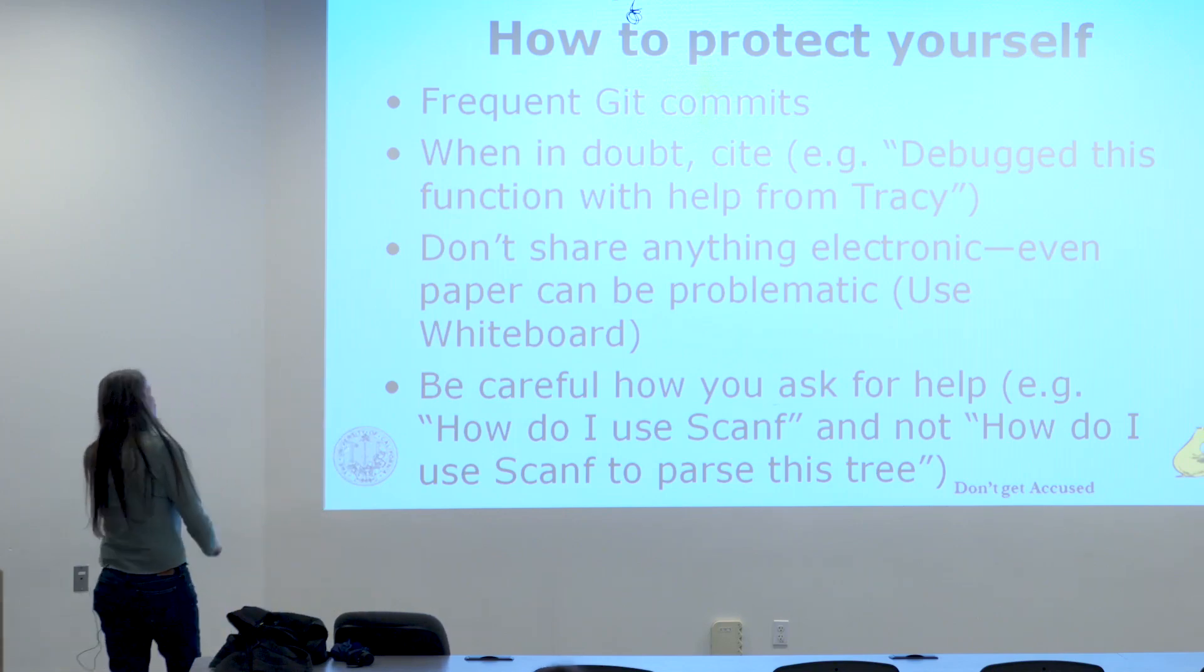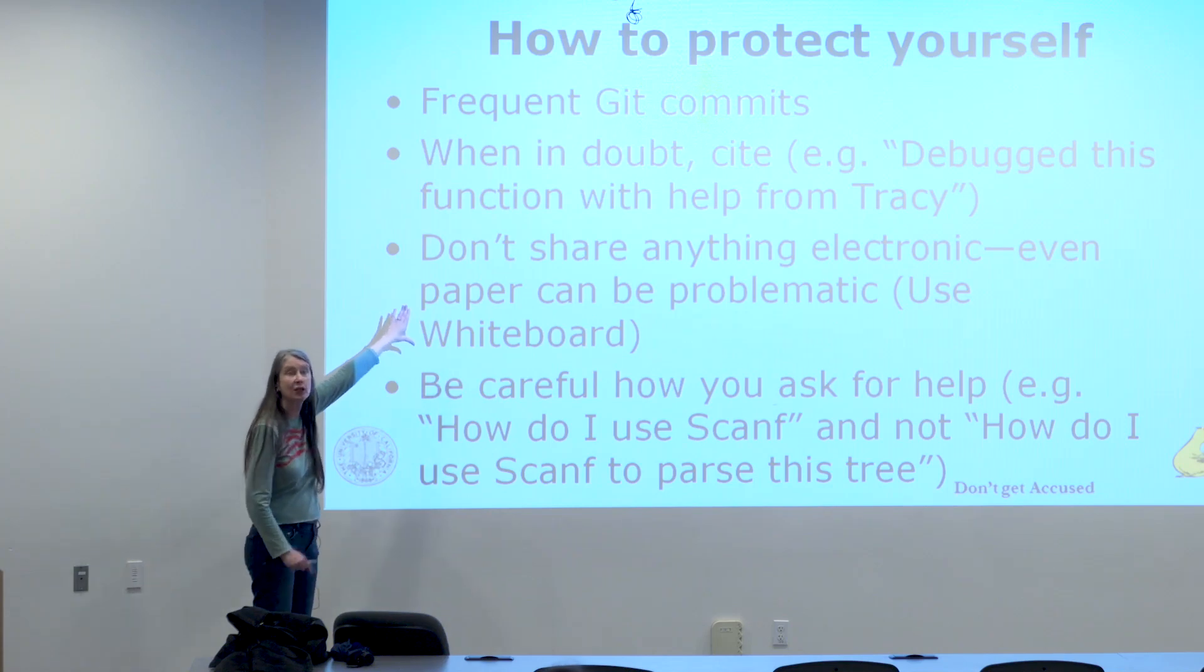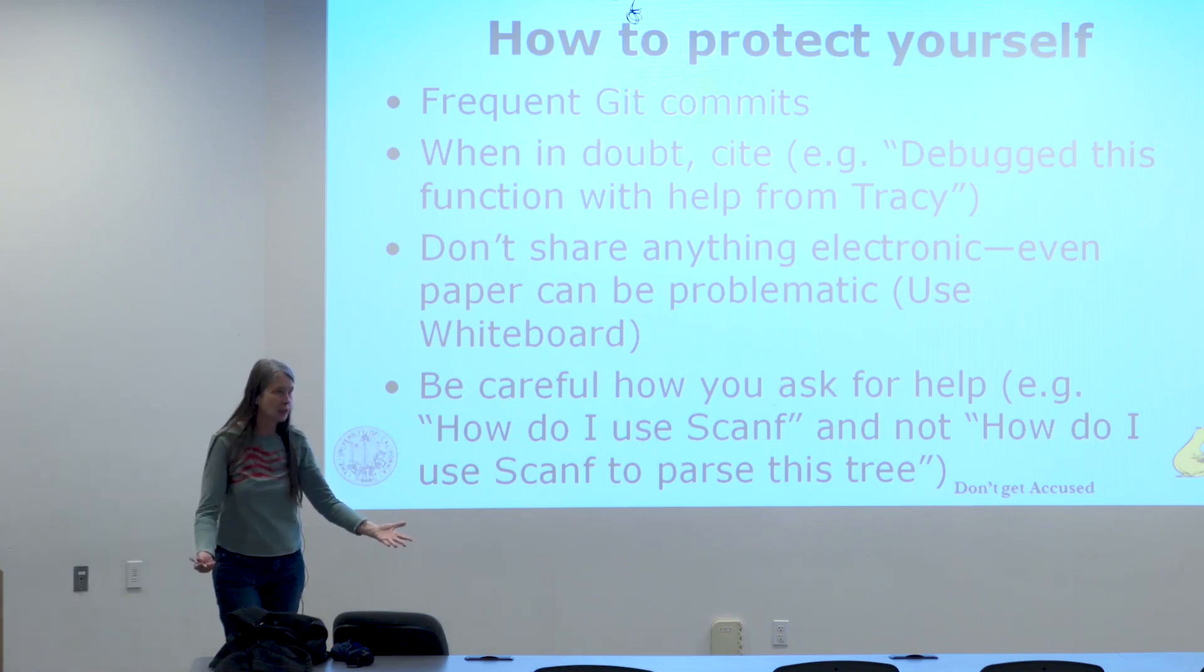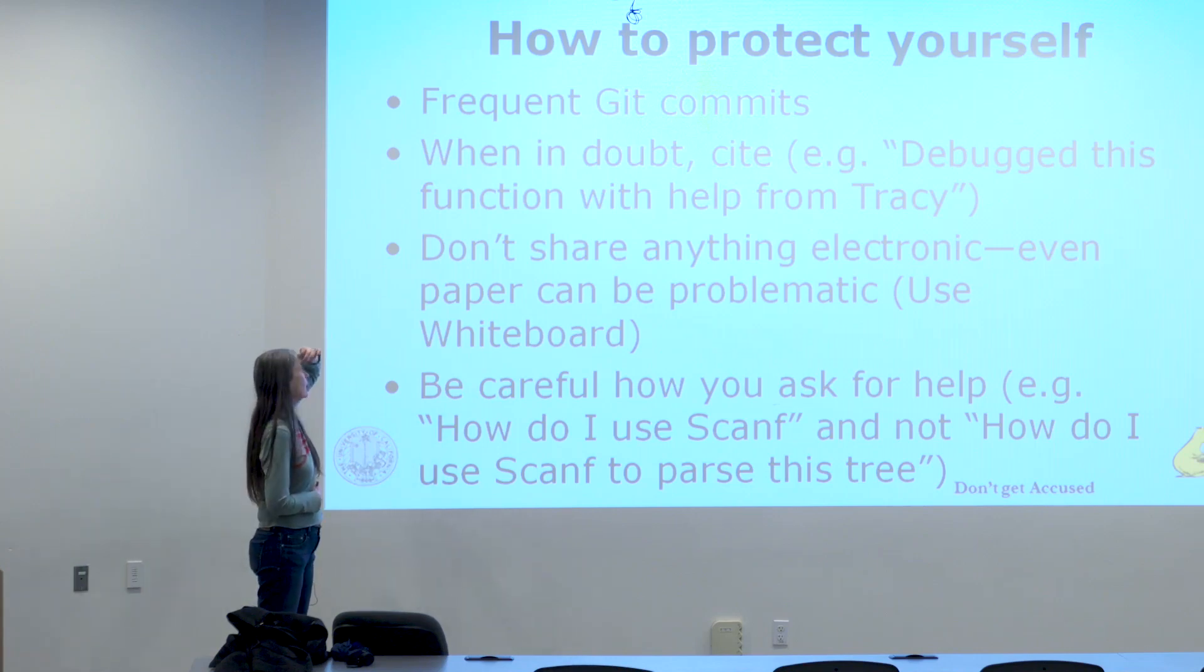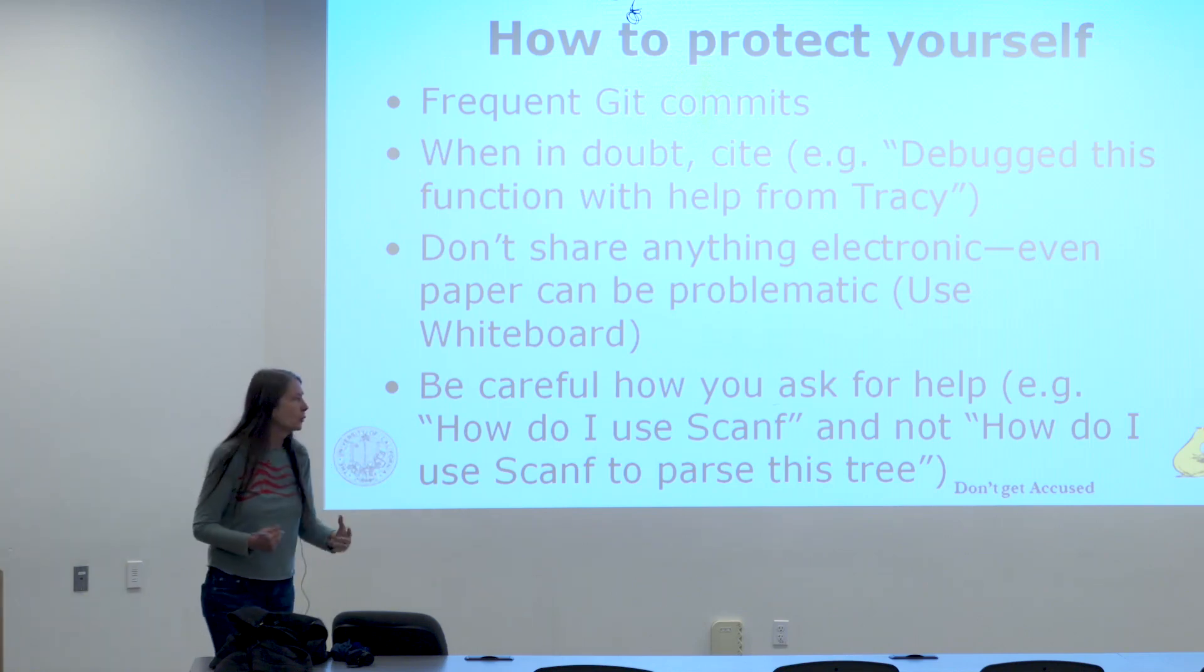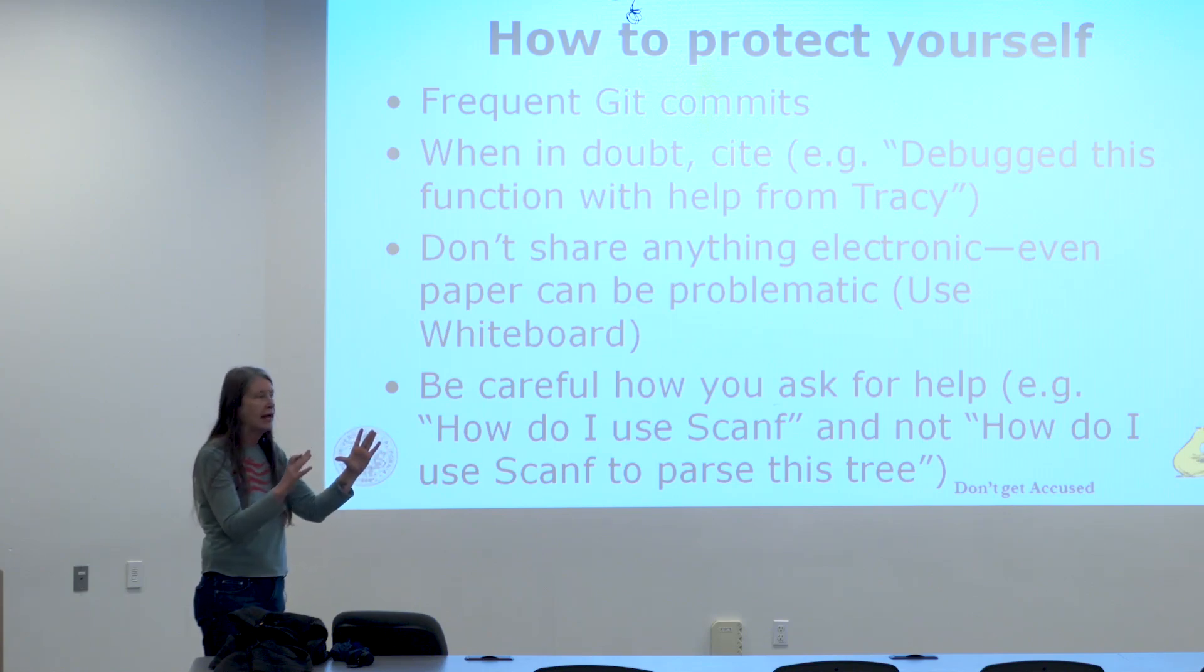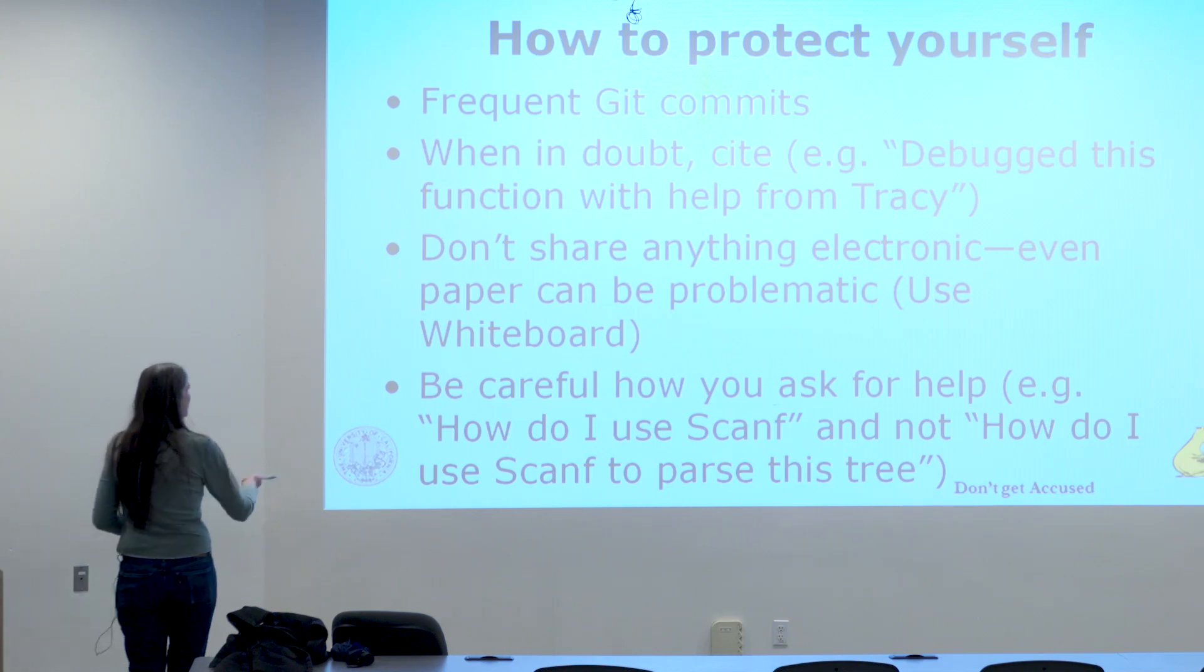So how do you protect yourself? And I spent a lot of time talking to professors about this. How do you make sure that you don't get accused of cheating when you were doing everything you thought you were supposed to be doing? Number one, frequent git commits. I had the professor who's probably responsible for the most cheating incidents that Alan has ever seen tell me that if you had frequent git commits where it was clear that they could see what you were working on, they wouldn't even accuse you of cheating if you had 94% code in common.